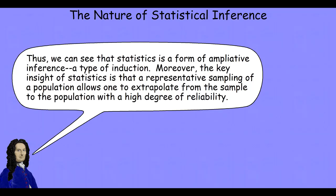As a result, we can see that, by its very nature, statistics is a form of amplitive inference, a type of induction. It goes from information that we have explicit and available to us, that is, our sample, and it goes beyond what's guaranteed to be true, given that information. And in doing so, it makes explicit and available for us new information that we otherwise wouldn't have.